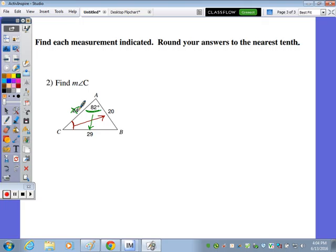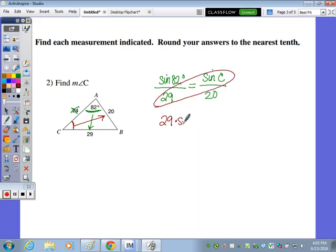Okay, find the measure of angle C, so I'm going to do the sine of 82 degrees over the length of the side opposite, which is 29, equals the sine of C over 20. So my cross product is going to be 29 times the sine of C equals 20 times the sine of 82.